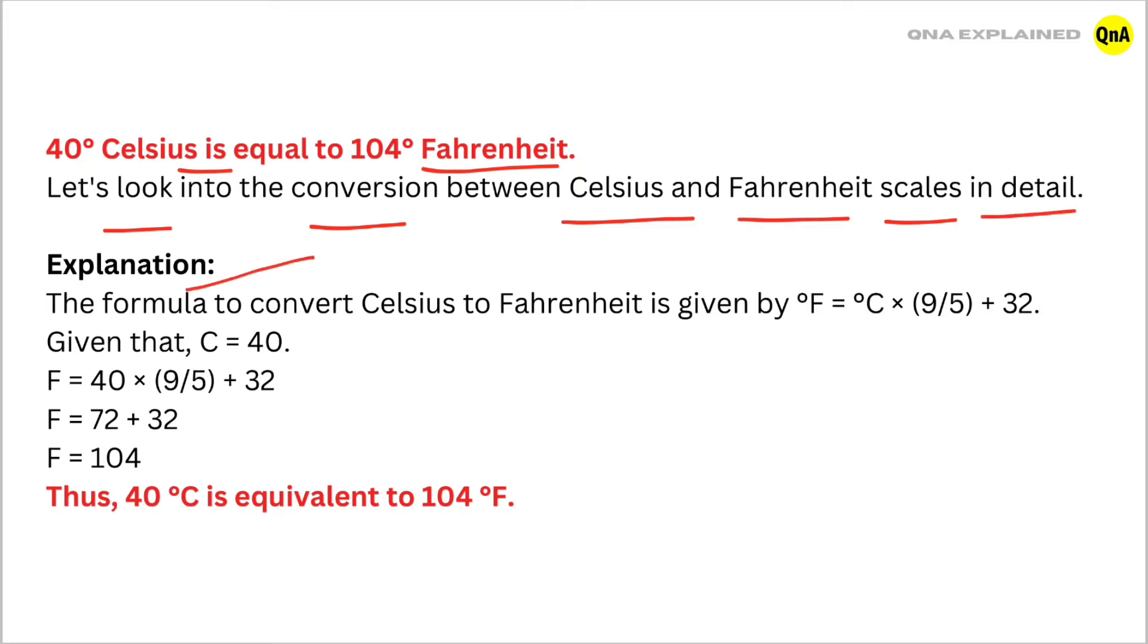Explanation: The formula to convert Celsius to Fahrenheit is given by °F = °C × (9/5) + 32.